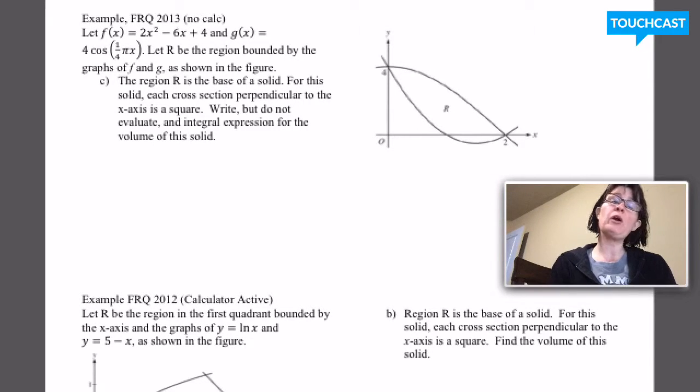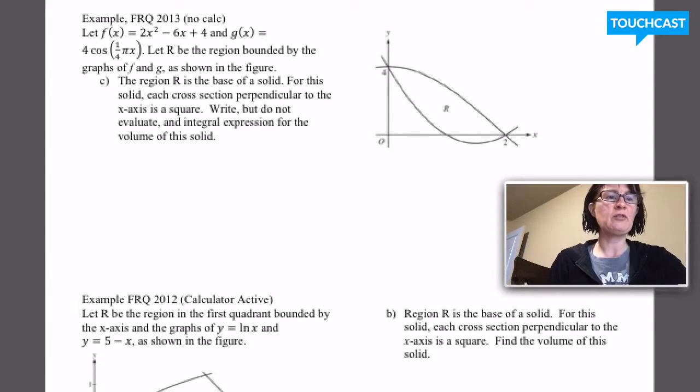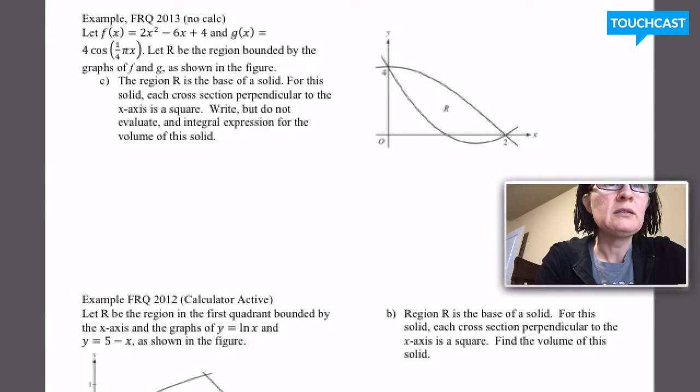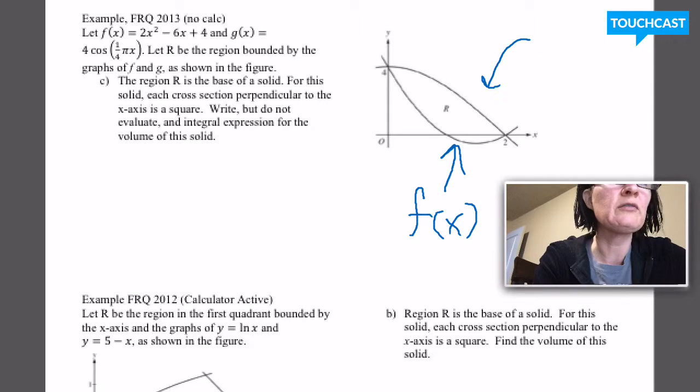This is part C of a problem that we saw part A of back in 7.2. So here I have two functions which cut off a region, which we're calling R. I could remember what I did before, or I can stop and figure it out again. Let's see. G is a cosine curve and F is a parabola, a parabola whose vertex should be at 3.5. Okay, so this guy down here is F of X. The cosine curve up here is G of X.